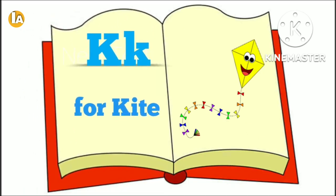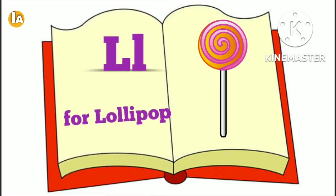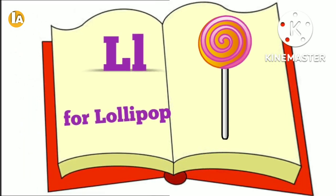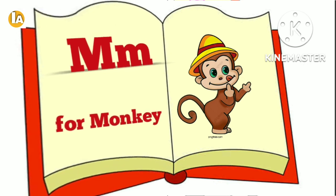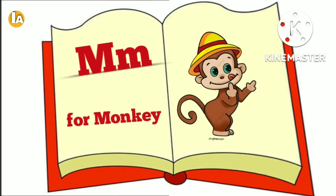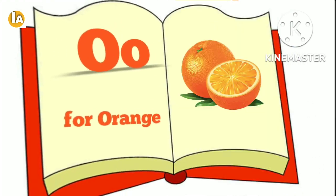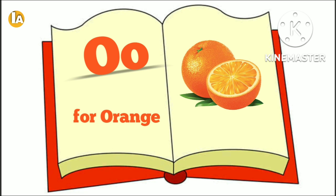K for Kite. L for Lollipop. M. M for Monkey. N. N for Nest.